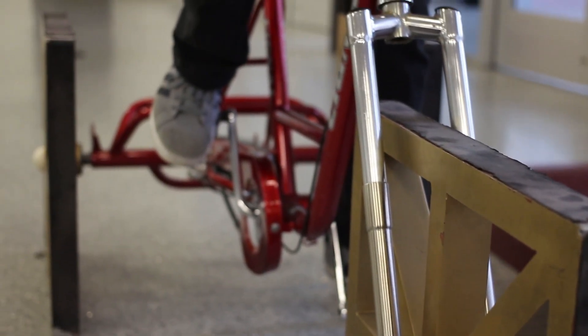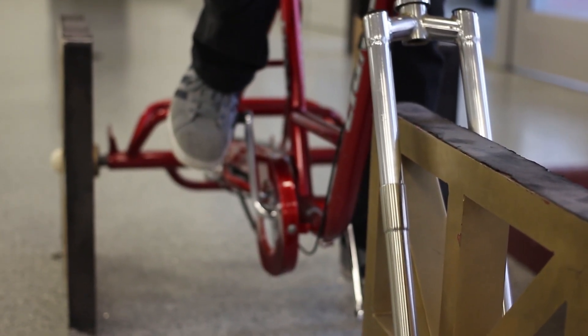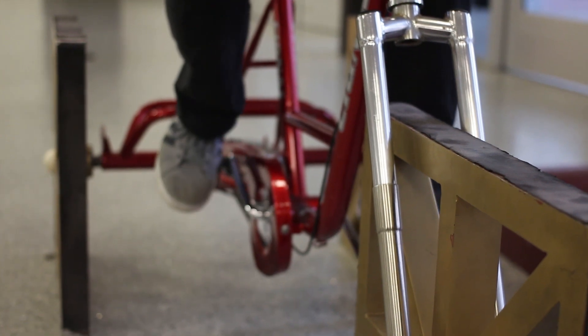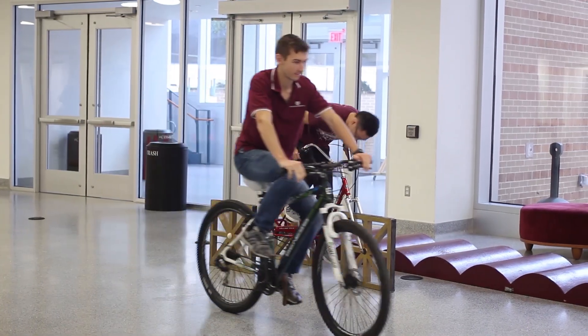When you were a kid, did you ever wonder why tricycles had only round wheels? Probably not, since wheels roll on the ground and that ground is usually flat.